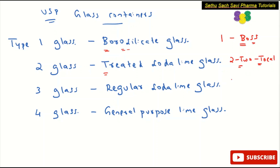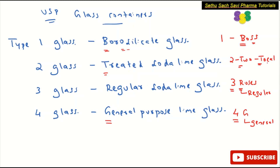For Type 3, remember '3 roses' — R for roses means regular — so Type 3 is regular soda lime glass. For Type 4, remember '4G connection' — G means general purpose — so Type 4 is called general purpose soda lime glass. So: 1 Bose, 2 treated, 3 roses/regular, 4G/general purpose.